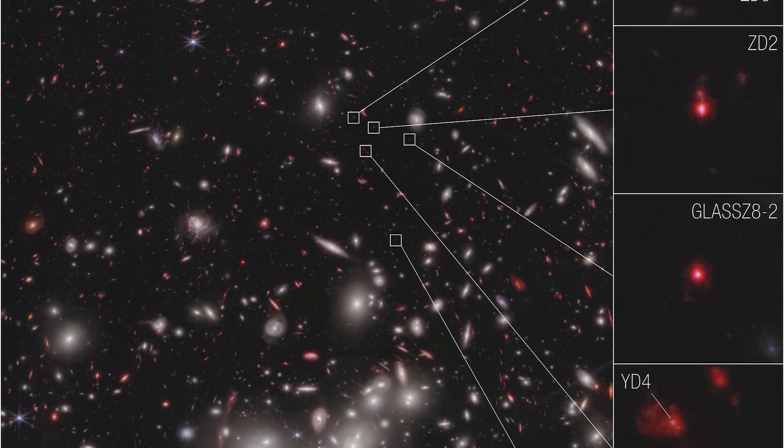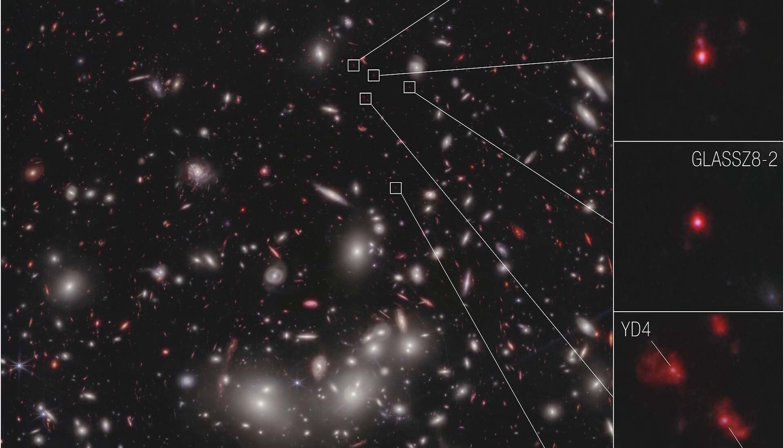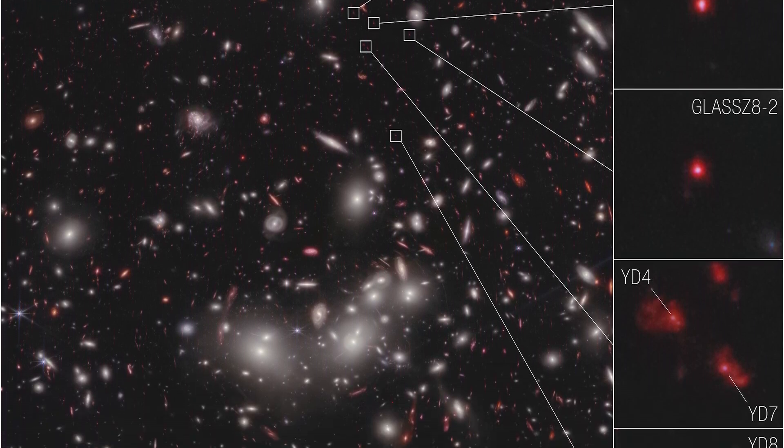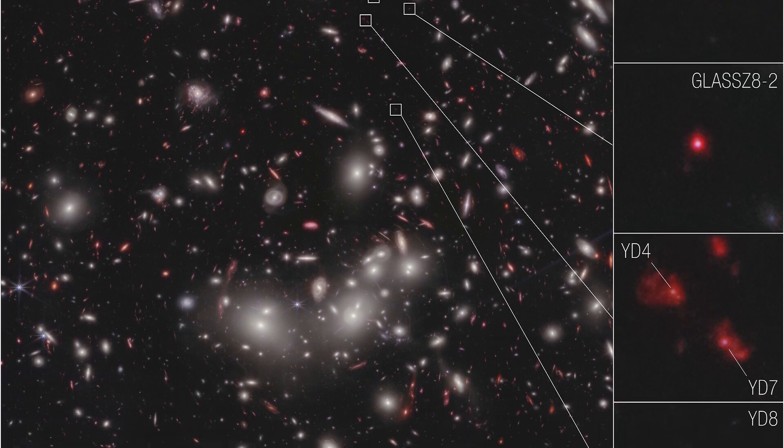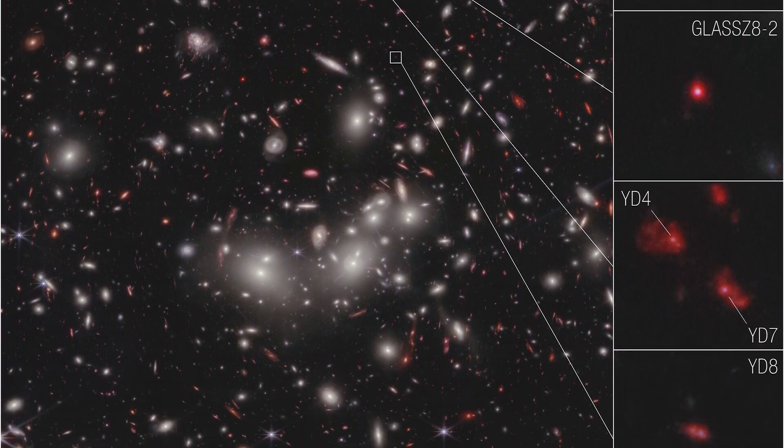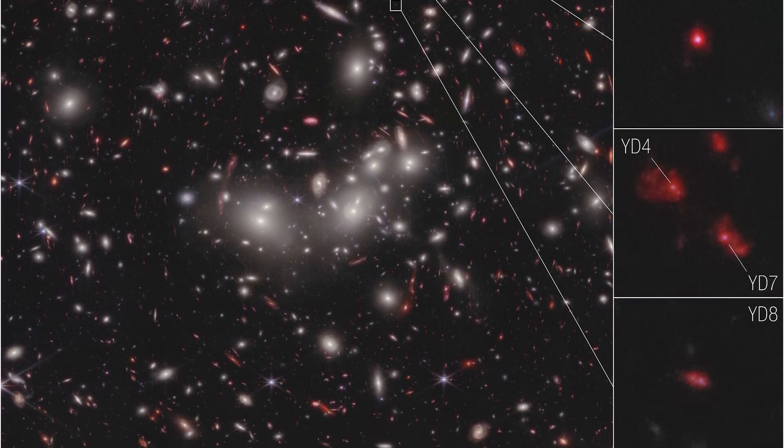Now, researchers can measure the velocities of these seven galaxies, which gives them the confidence to confirm that they are bound together in a protocluster. To put this in perspective, NASA scientists compared these distant galaxies to small drops of water in different rivers that will eventually join together to form a large, powerful river.